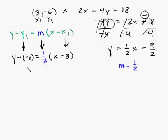And y minus negative 6 is actually y plus 6, which is equal to, distribute the 1 half, so you get 1 half x minus 1 half times 3, which is 3 halves.